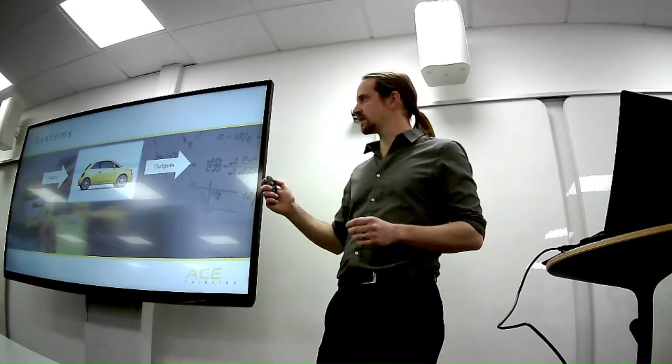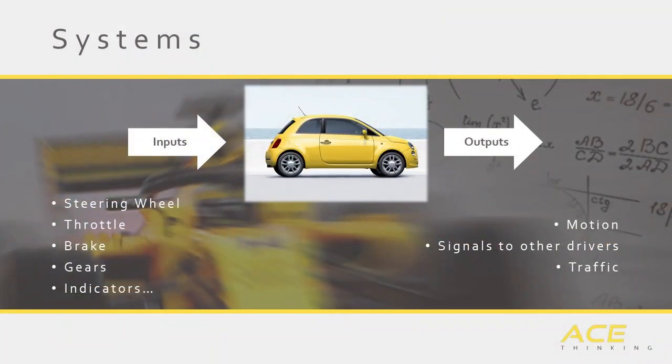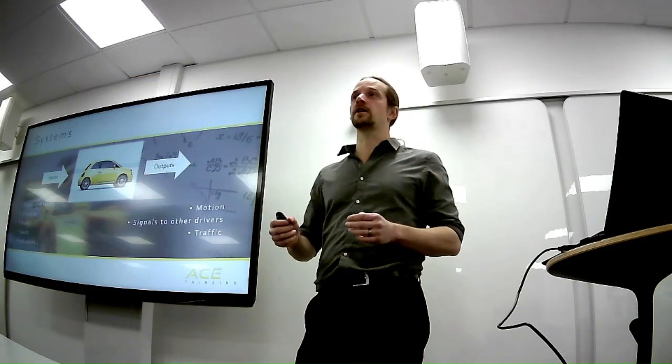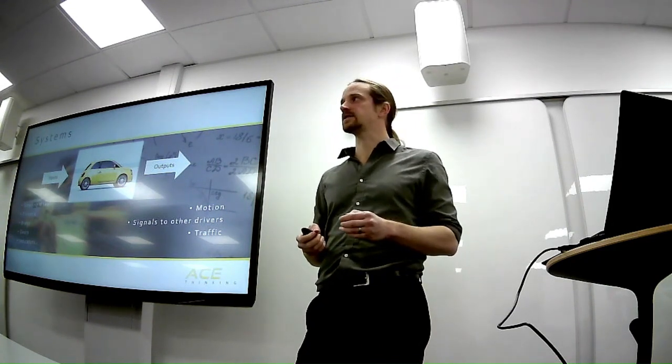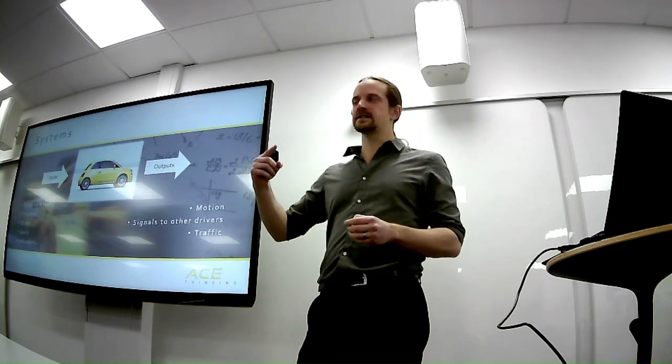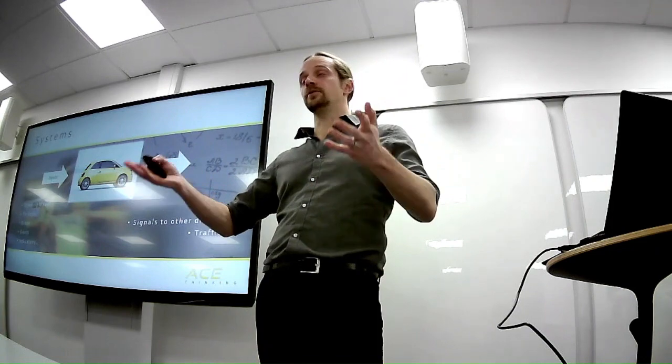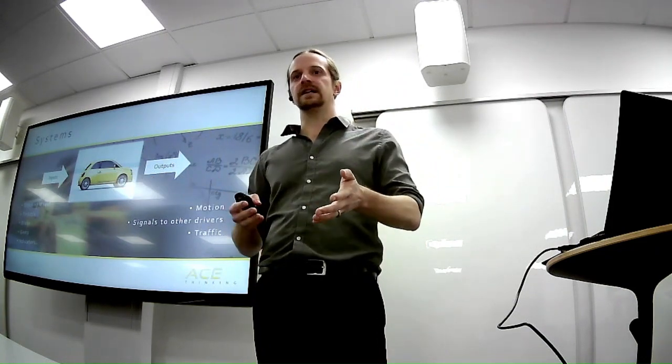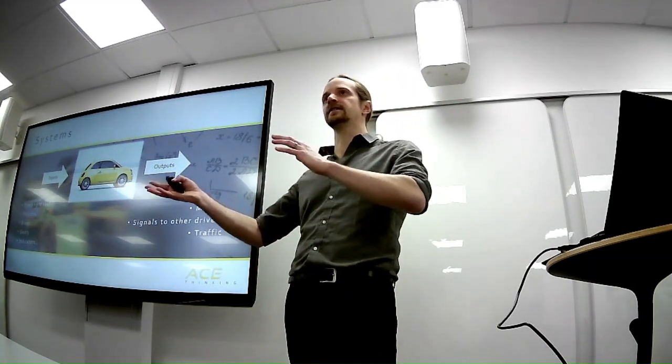We've got a car on the screen here, which you could describe as a mechanical system. But we could all equally talk about biological systems, political systems, IT systems. There's plenty out there. But for all systems, we're going to have a series of inputs and a series of outputs. So, with our car example, there are lots of different inputs we can make. We can turn the steering wheel. We can press the throttle pedal. We can change gears. We can brake. We can turn the dials on the radio. We can turn on the indicators, that sort of thing. And as a result of that, we're going to get some outputs. There'll be the motion of the car. There'll be the noise coming out of the speakers. There'll be signals to other road users. And the car itself is going to introduce some traffic into the road network.